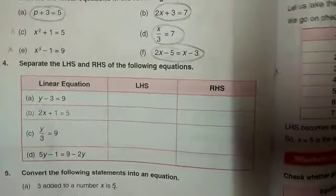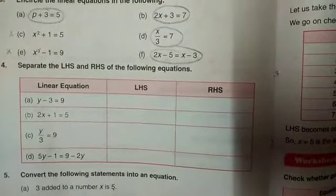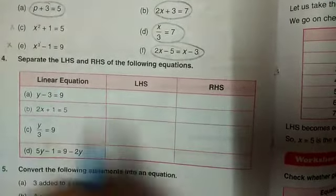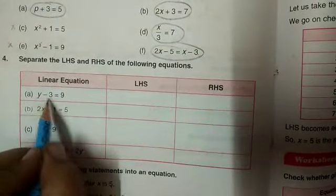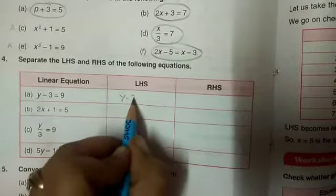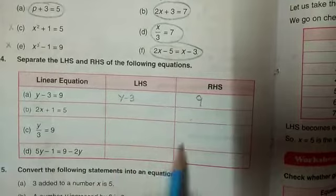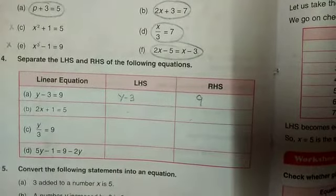Now, fourth question. We are to separate the left hand side and right hand side of the equation. Which is written in the left hand side? Y-3. Right hand side? 9. Similarly, all three parts remaining you will do yourself.